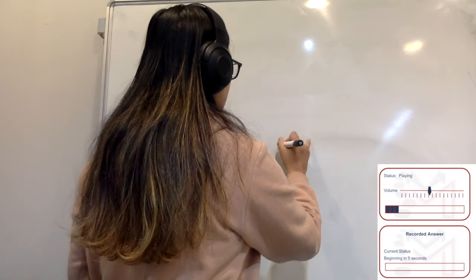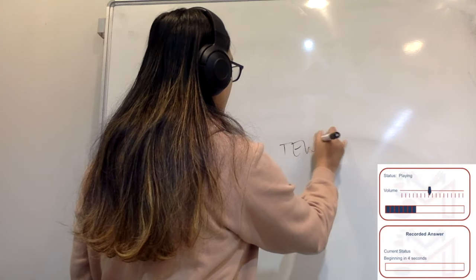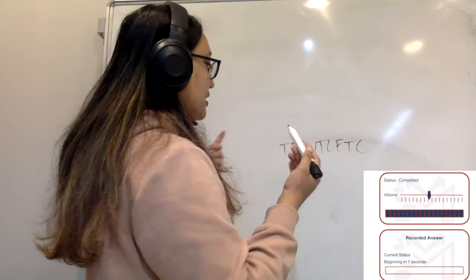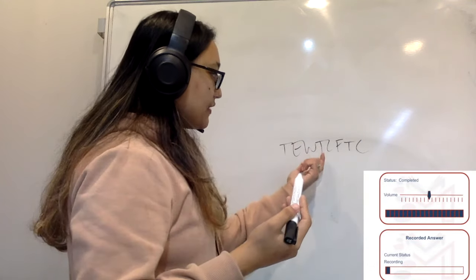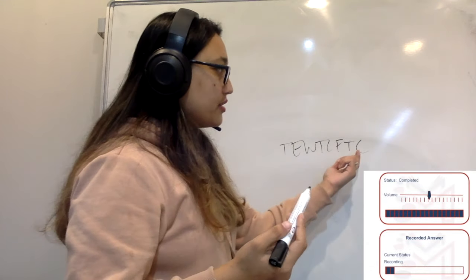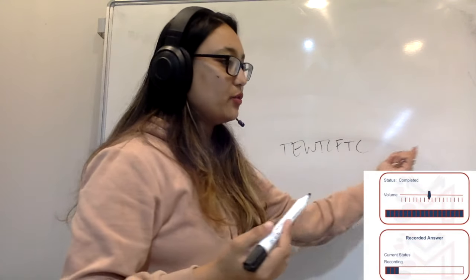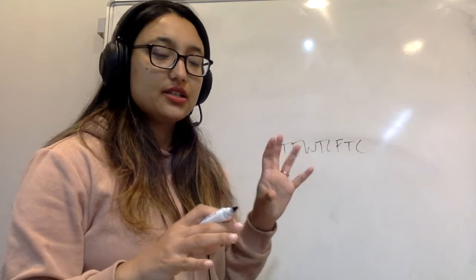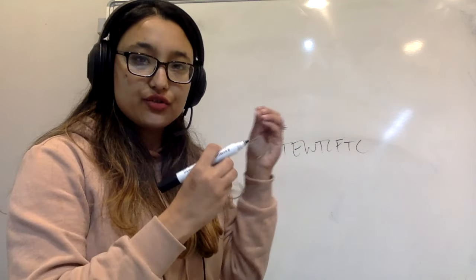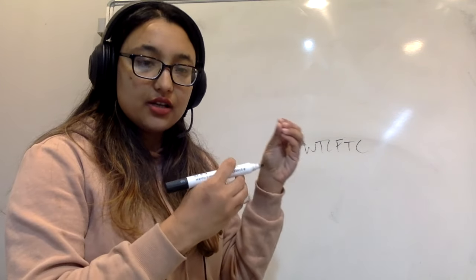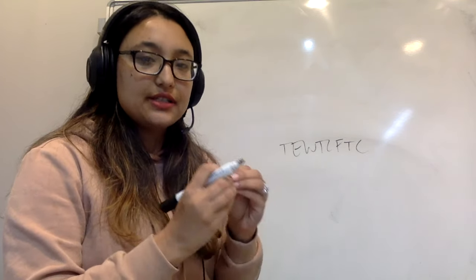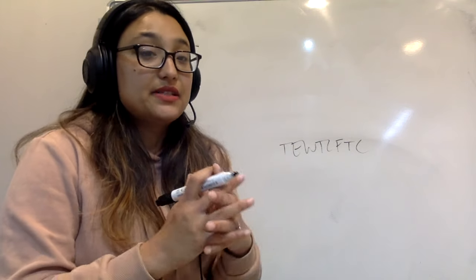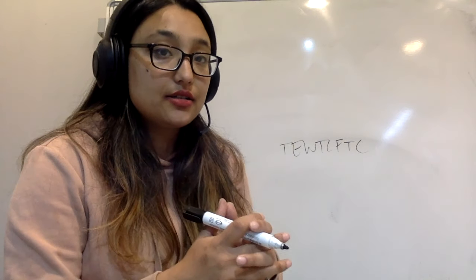Audio: 'The English word typhoon comes from the Chinese word big wind.' Response: 'The English word typhoon comes from the Chinese word big wind.' I had to struggle a little bit — I had to go back to that audio so I took a little extra time, but it's still considered fluent.